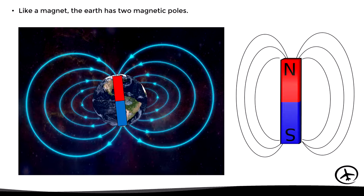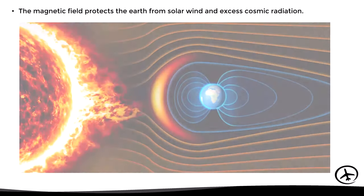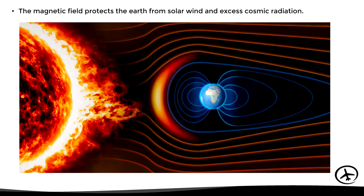Now this magnetic field has several practical applications. For example, it protects the earth from solar wind and excess cosmic radiation from space. It also allows magnetic compasses to function, thus assisting navigation.